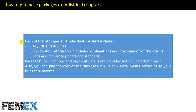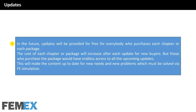Each package and individual chapter includes CAE, JNL, and IMP files, step-by-step tutorials with detailed explanations and investigation of results, slides, and reference papers and standards. Packages, specifications, and payment details are provided in the video description. You can pay in 2, 3, or 4 installments. Future updates will be provided free to all purchasers, and the cost will increase after each update for new buyers. Purchasers have endless access to all upcoming updates.